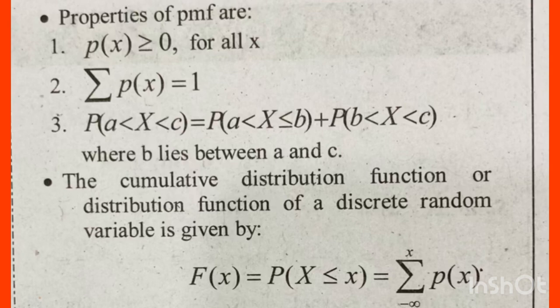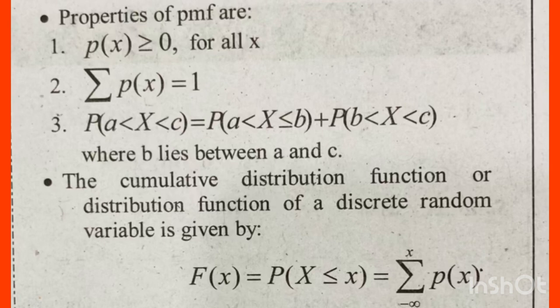This additive property holds where b lies between a and c. This particular property is important. The cumulative distribution function, or CDF, of a discrete random variable is given as F of x equal to P of X less than or equal to x, which equals sigma from minus infinity to x of P of x.